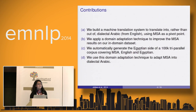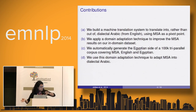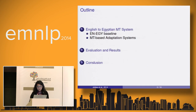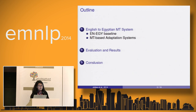We build a machine translation system for English to Egyptian using MSA as a pivot. We apply two different techniques to adapt the domain and dialect from out-of-domain data into in-domain data. For this we automatically generate an Egyptian side of a 100K tri-parallel corpus covering MSA, English, and Egyptian. The outline covers: how we built the system and baseline, the different adaptation systems, evaluation, and results.